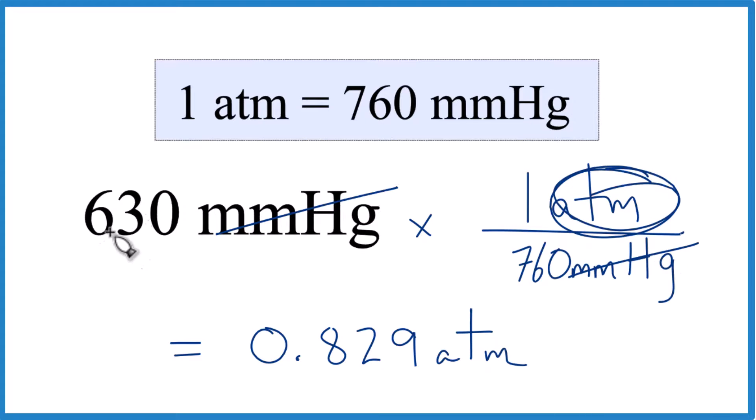That's it. It's Dr. B converting 630 millimeters of mercury to atmospheres. The answer is 0.829 atmospheres. Thanks for watching.